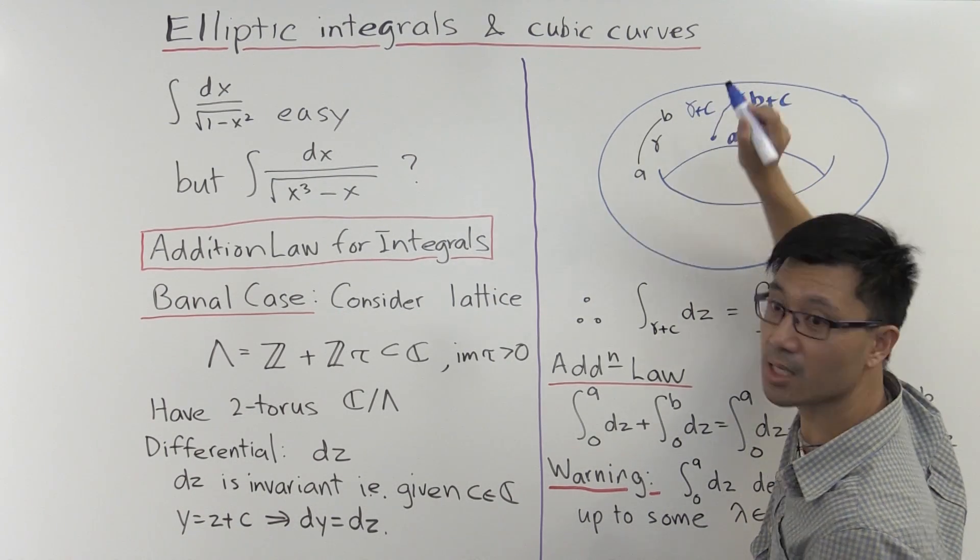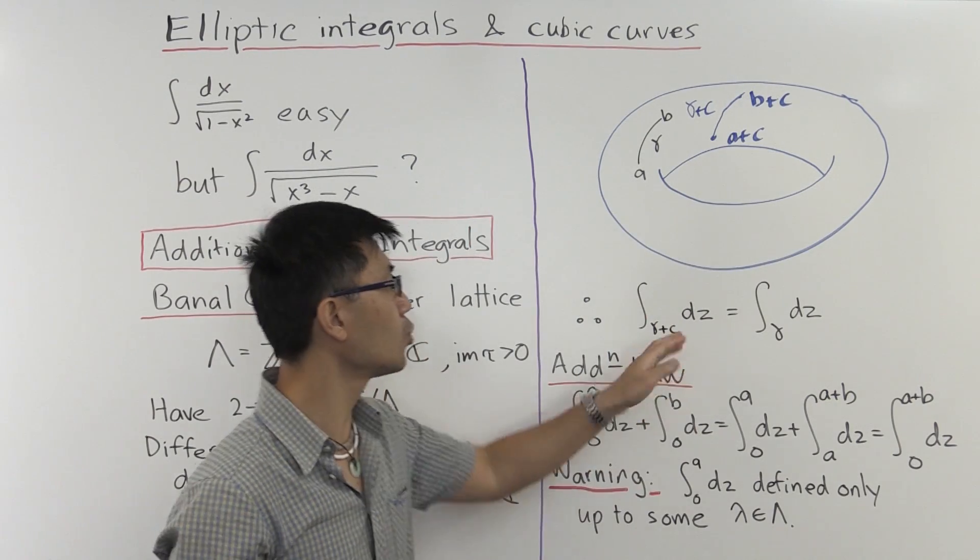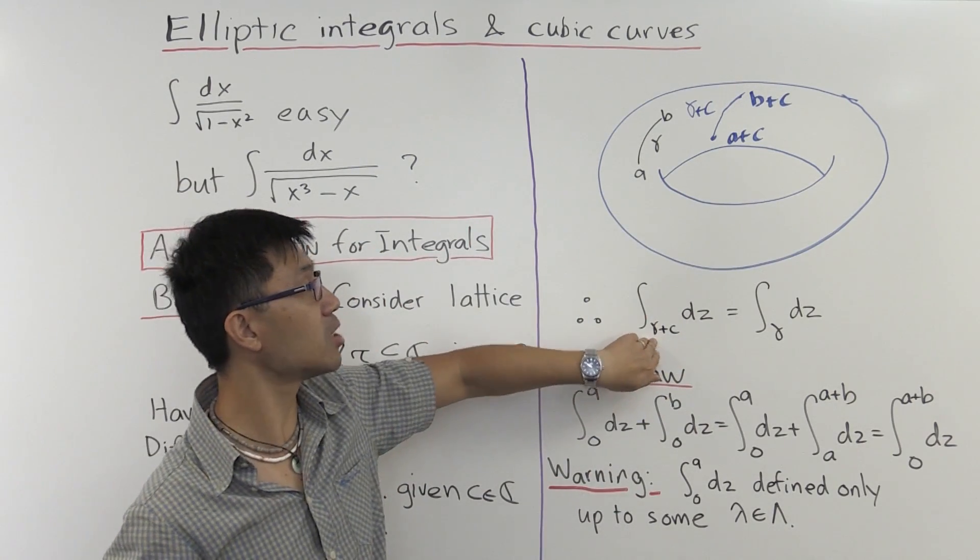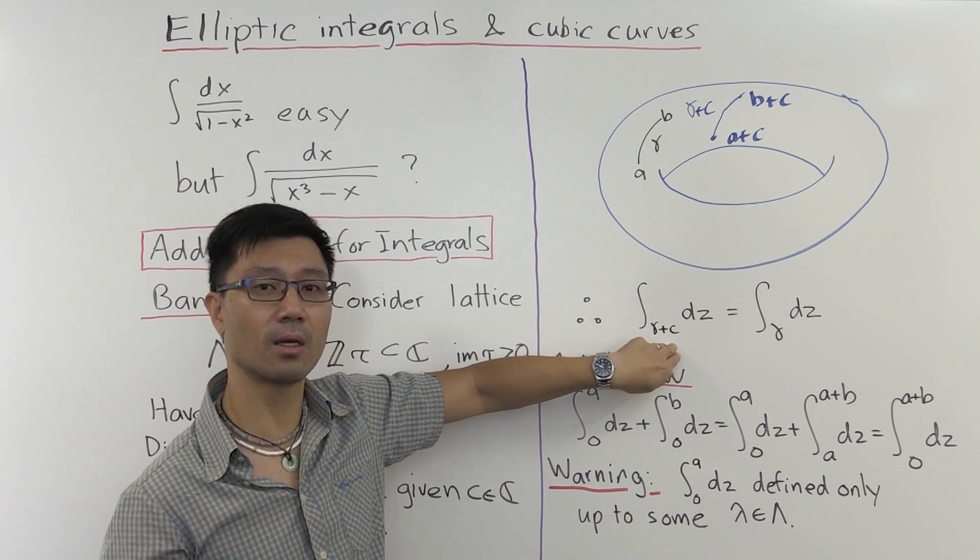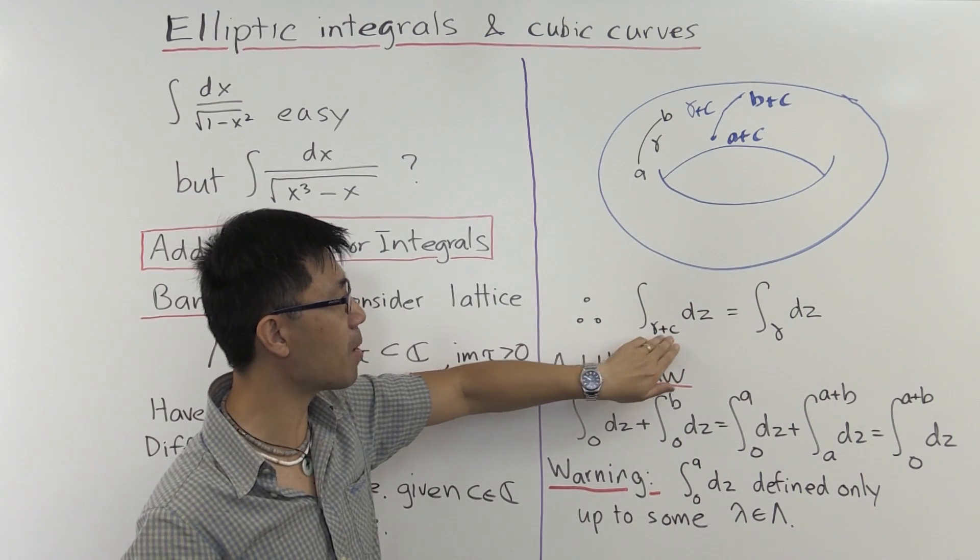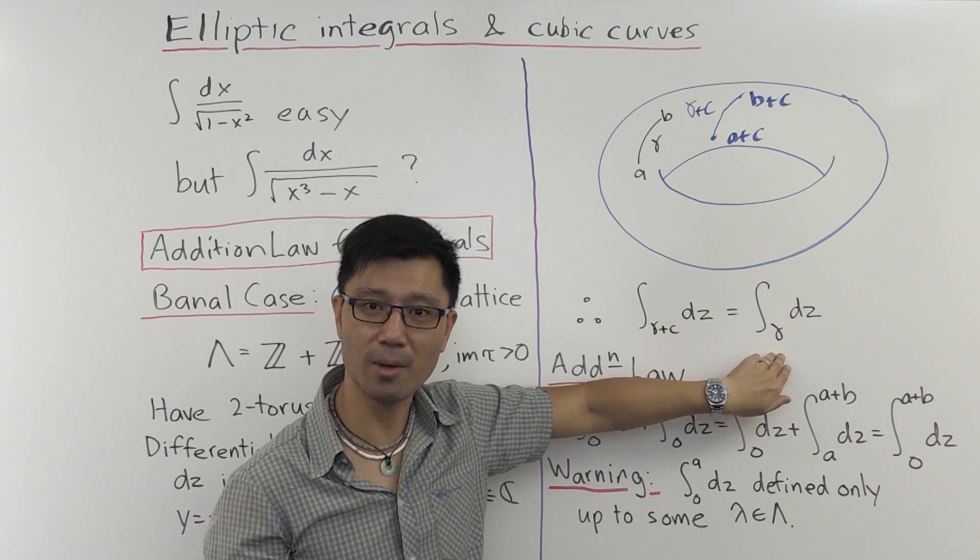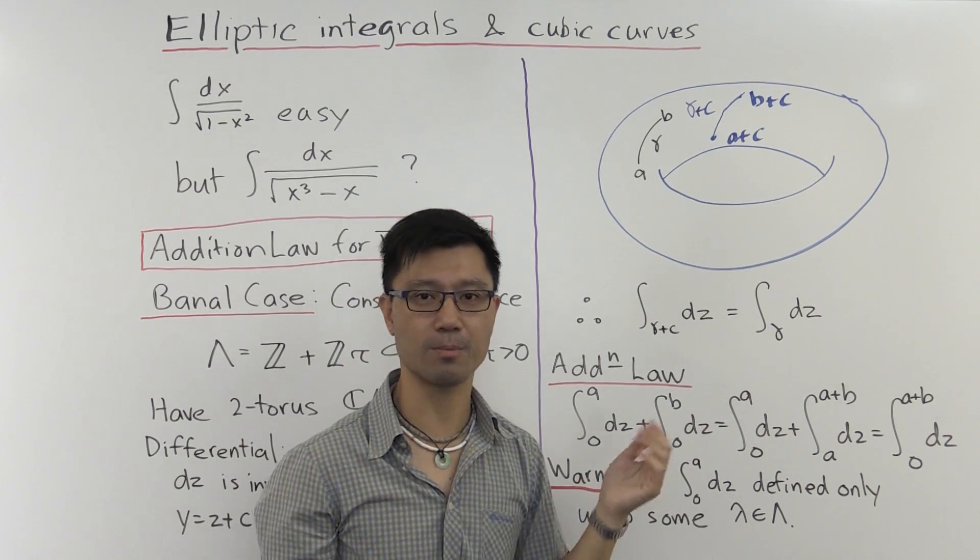That gives you a new curve. And you can integrate over that. And just by a simple change of variables, we see that, of course, the integral over this γ + c is just the same as the integral over γ. That's what invariance buys for us.